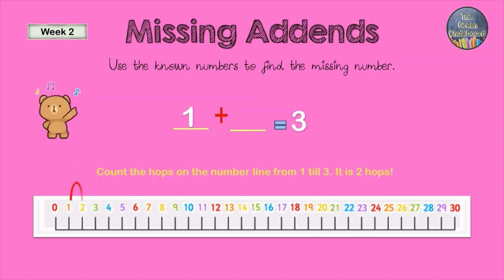Count the hops on the number line from 1 to 3. It is 2 hops.